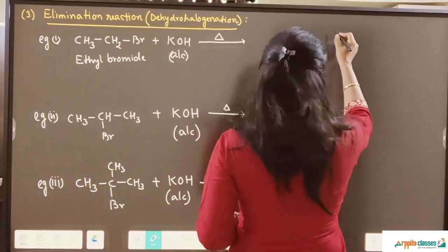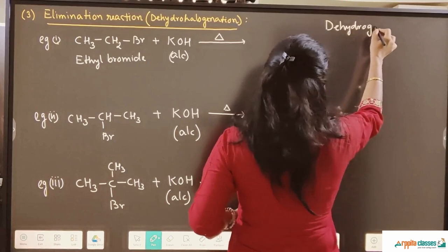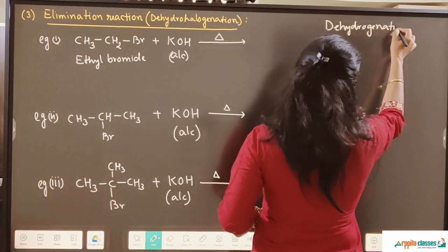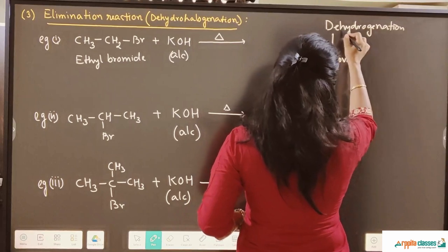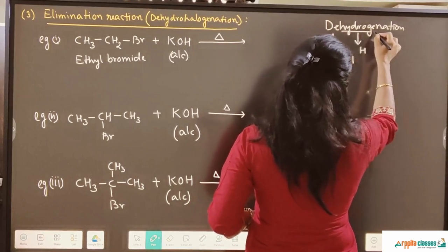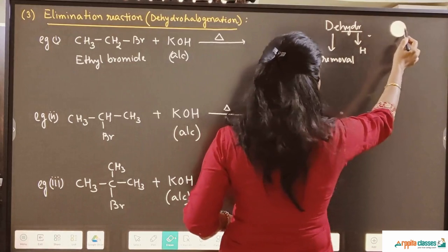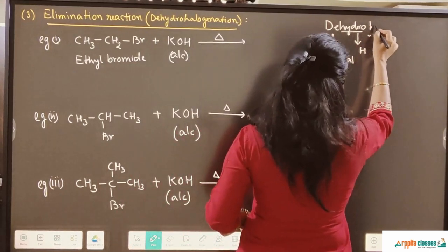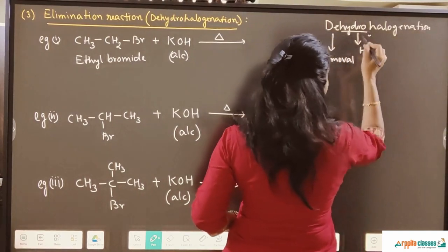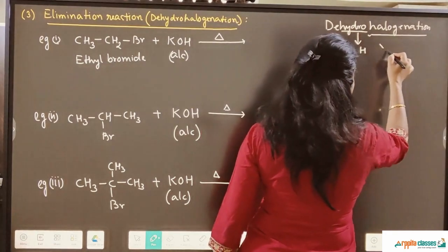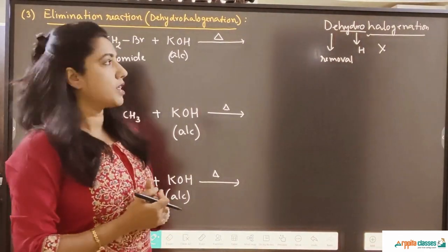First we will understand the meaning of Dehydrohalogenation. 'De' means removal, 'hydro' means hydrogen, and 'halogenation' refers to halogen, meaning X. So here, removal of HX will be taking place. How does this removal of HX take place?